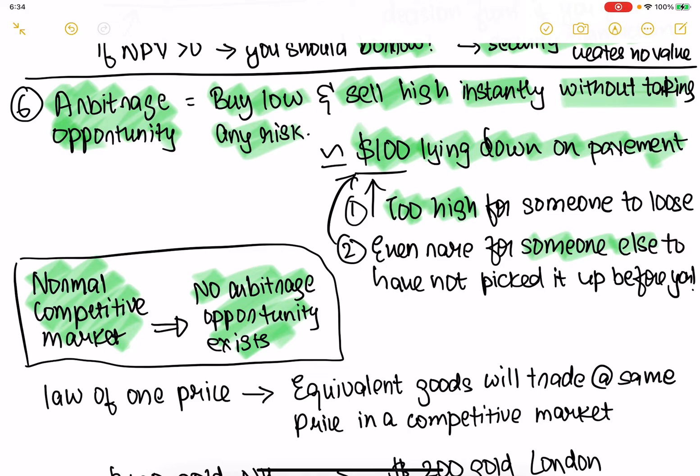Investment is really about finding arbitrage. When Warren Buffett invests, he's finding that cash flows are much more positive and his NPV calculation shows a positive result, so he goes and buys. Stock investment is about buying low and selling high — that is an arbitrage opportunity. But in a competitive market, if you buy and sell instantly, there is no arbitrage opportunity.